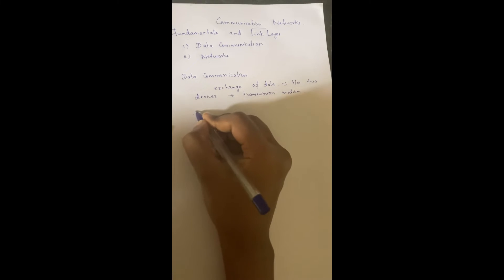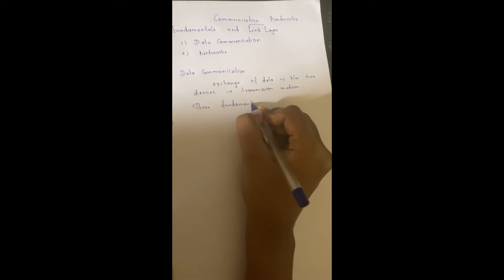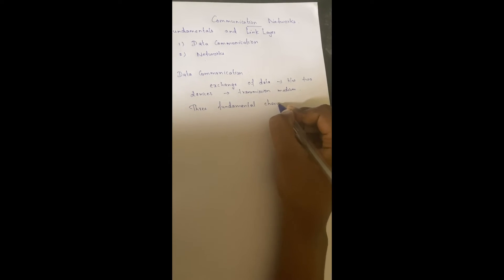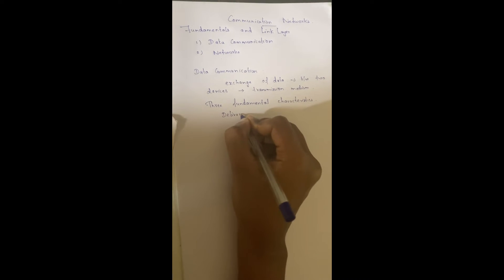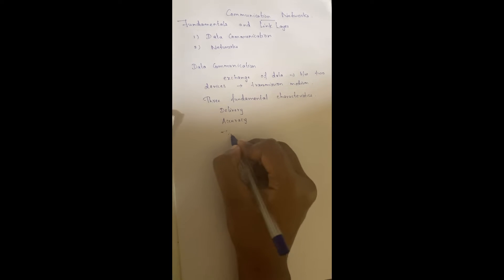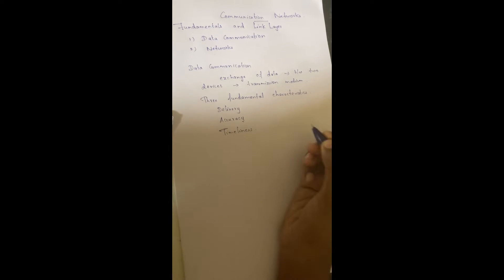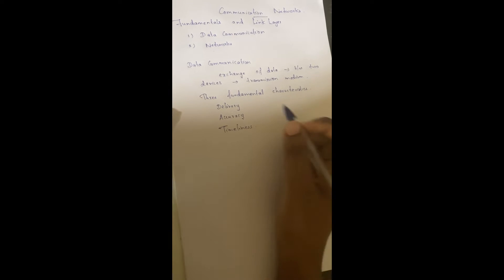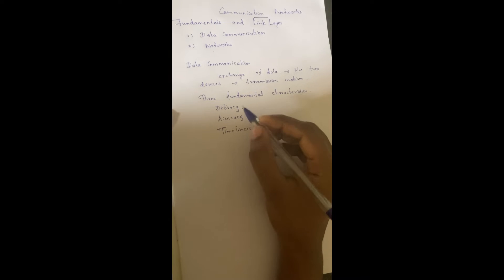Now we are going to see three fundamental characteristics of data communication. The three fundamental characteristics are delivery, accuracy, and timeliness. First one is delivery — the system must deliver data to the correct destination.